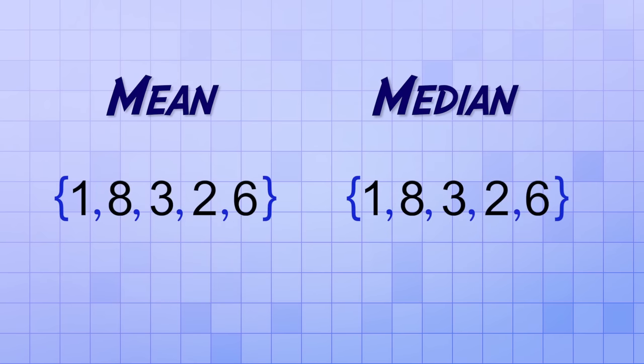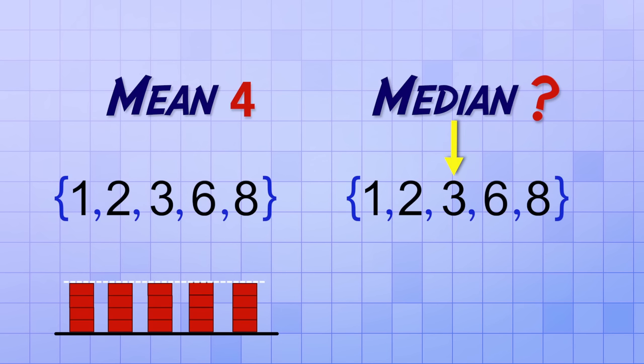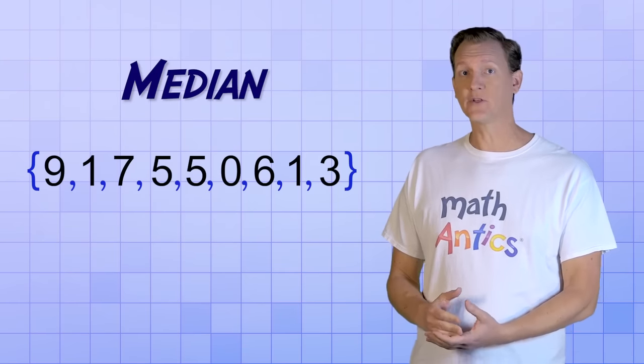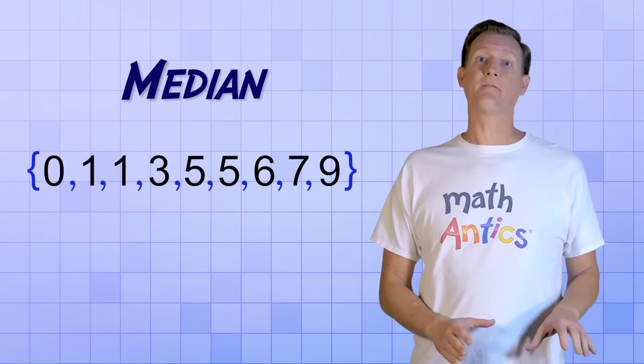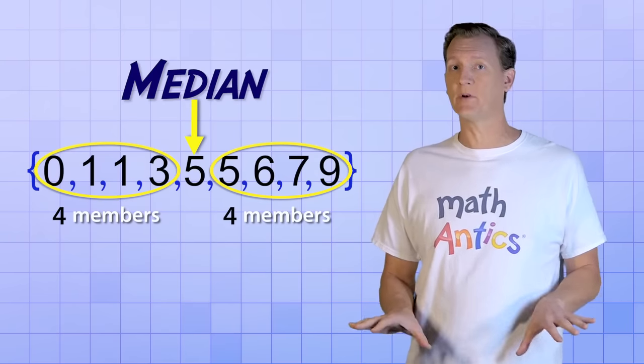But what about the first dataset that we found the mean of? We determined that the mean of this dataset is 4, but what about the median? Well, the median is the middle and since this dataset is already in order from least to greatest, it's easy to see that the 3 is located in the middle since it splits the other members into two equal groups. So for this dataset, the mean is 4, but the median is 3. So to find the median of a set of numbers, first you need to make sure that all the numbers are in order and then you can identify the member that's exactly in the middle by making sure there's an equal number of members on either side of it.